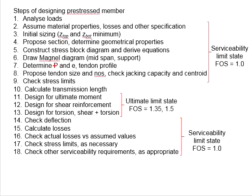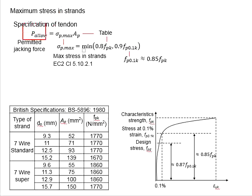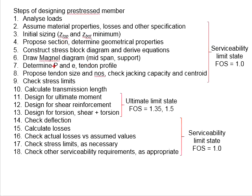Sometimes the pre-stressing force P obtained from the Magno diagram is larger than the permissible jacking force. You may increase the number of tendons so that the maximum permissible jacking force is not exceeded. This will depend on the number of strands and their positions, as the eccentricity may alter. You can use the centroid eccentricity of the group of tendons and determine the stressing force based on the feasible regions of the Magno diagram.